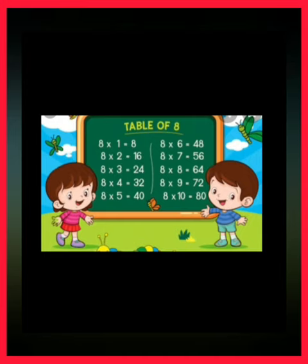Now we are going to read the full table of 8. 8 ones are 8. 8 twos are 16. 8 threes are 24. 8 fours are 32. 8 fives are 40. 8 sixes are 48. 8 sevens are 56. 8 eights are 64. 8 nines are 72. 8 tens are 80.